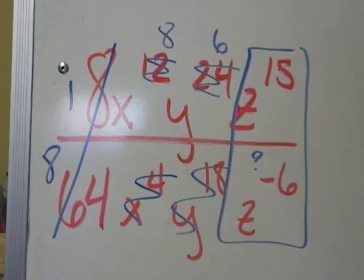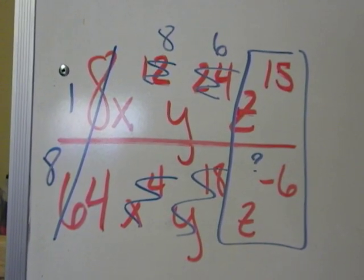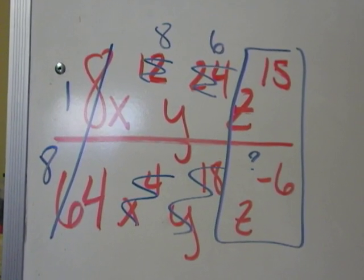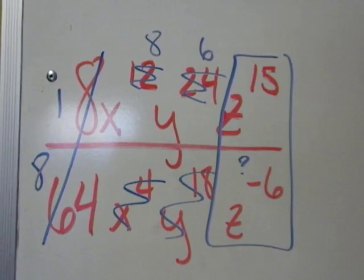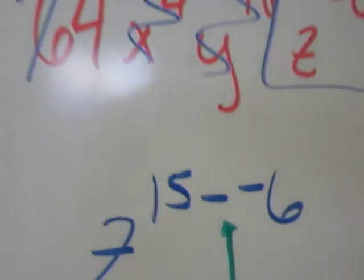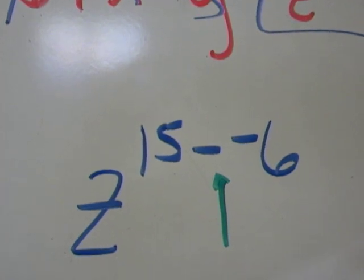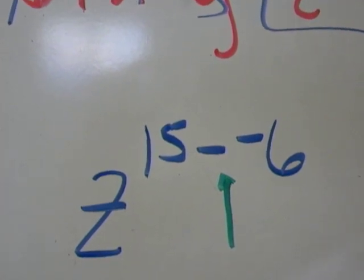But we have a new situation. What's with that negative exponent? You're supposed to subtract 15 minus negative 6.